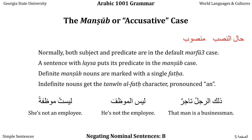In the third example, 'Leysat muwadzafatan' — the Mubtada is the implied Hiya because of Leysat, and the Chabar is Mwadzafa, meaning 'an employee.' Because it is indefinite, we mark it with a double character, and because it follows Leysa it is in the Mansoub case, so we use the Tanwina al-Fatah character and say 'Leysat muwadzafatan.'